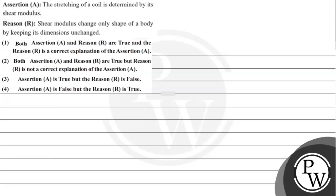Hello, let's hear the given question. The question says: Assertion A - the stretching of a coil is determined by its shear modulus. Reason R - shear modulus changes only the shape of a body by keeping its dimensions unchanged.